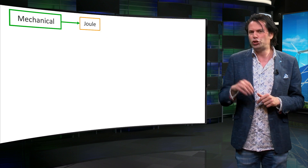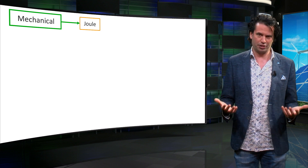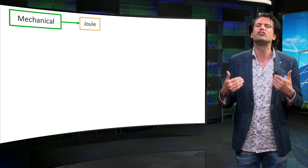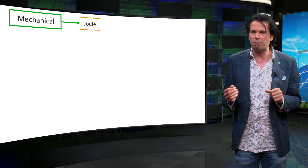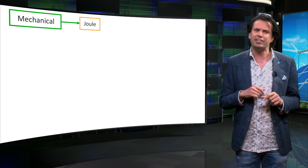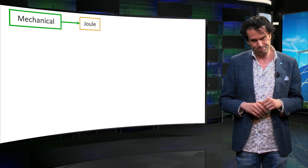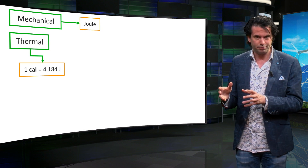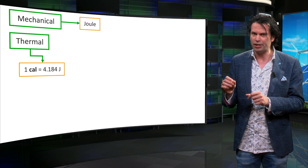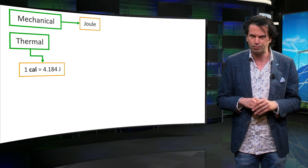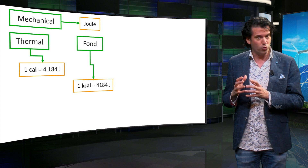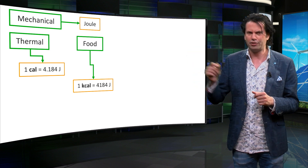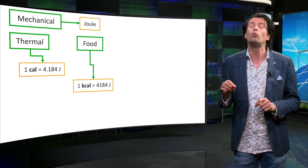We saw in an earlier slide that the joule, the unit of energy, is defined in relation to mechanical energy. However, energy has several different forms, and the definition of energy changes with each form. Consequently, industries which deal with a particular form of energy use a different unit corresponding to that particular definition of energy. Thermal energy is defined by the energy required to raise the temperature of water. The unit of thermal energy is the calorie, which is equal to 4.184 joules. The chemical energy contained in food is much larger than a calorie. The food industry therefore uses a higher order of magnitude — the kilocalorie. The kilocalorie is also sometimes just called calorie, but written with a capital C.